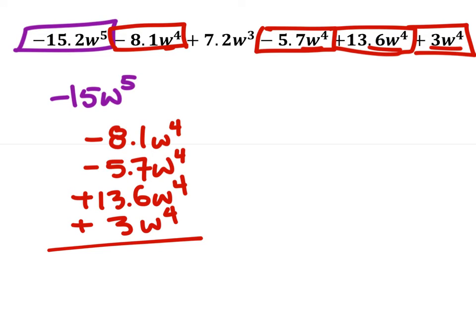So if I stack these, I can combine all of them, and my final answer will have a w to the power of 4 as well, which in a way also allows me to ignore all of these w's. Now, you may be asking why I would cancel them out or get rid of them. It's because now I just need to add and subtract these numbers. So I'd have negative 8.1 minus 5.7 plus 13.6 plus 3, which would be a positive 2.8.